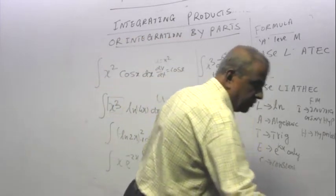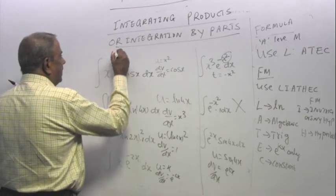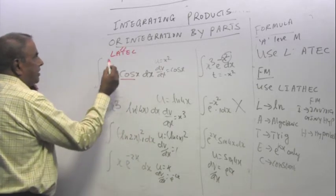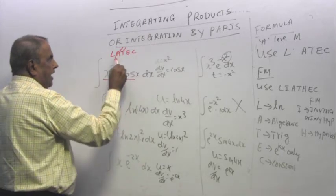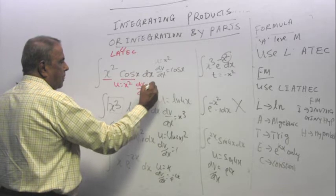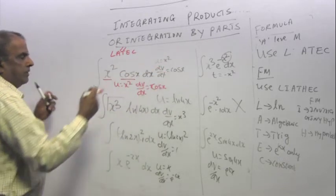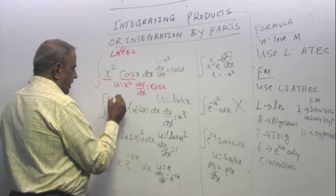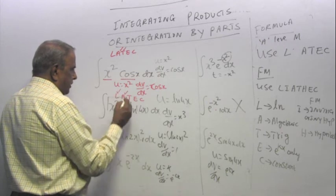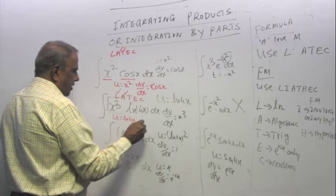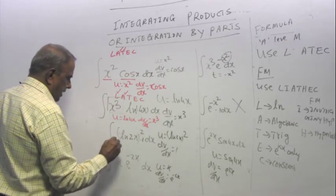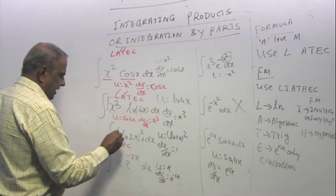If you remember LIATEC, then I will show you how. I will use red, I think, to show you here. Suppose I write LIATEC. X squared is algebraic. Cos x is trigonometry. Look at this. If you move from left to right, A comes first. Whatever comes first is u. Whatever comes next is dv/dx. With the same thing, I gave you the logic. Let's look here. LIATEC. X cube is algebraic. Log is L. L comes before A. So your u is ln 4x, your dv/dx is x cube. Here, LIATEC, there is an L and a C. So your u is ln 2x the whole square, and your dv/dx is 1.